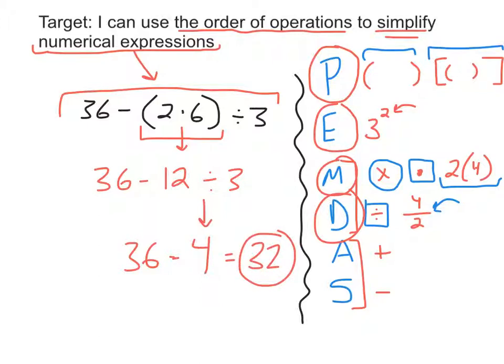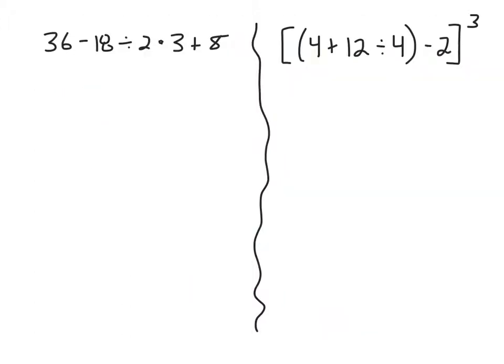So I just evaluated or simplified that numerical expression. The answer is 32. Let's try a few more practice problems, and I'm going to give you a few to try on your own. Let's take a look at the first one on the left — it's a big numerical expression: 36 minus 18 divided by 2 times 3 plus 8. So let's not forget PEMDAS.